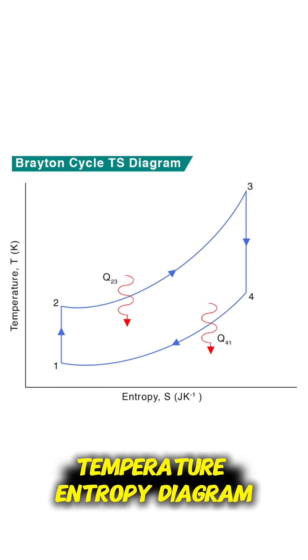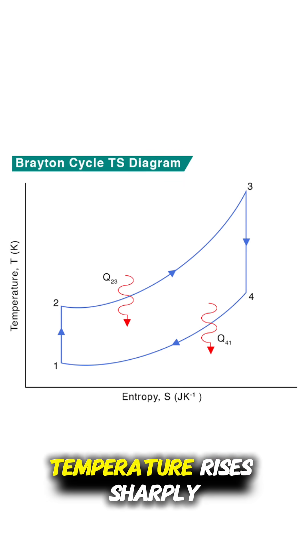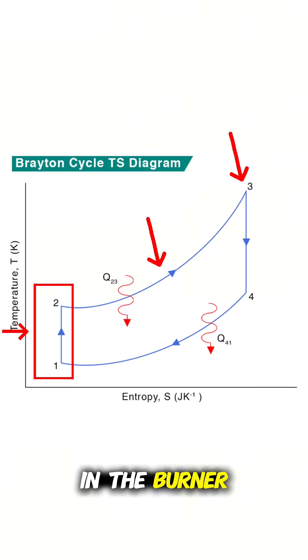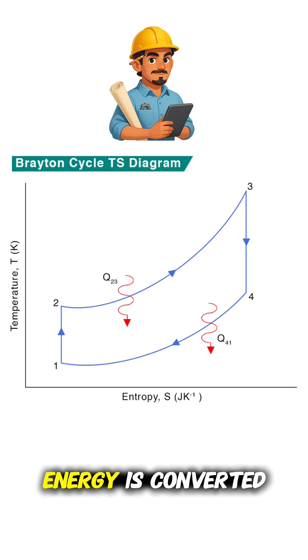The temperature-entropy diagram, which is the TS diagram, tells the thermal story. Temperature rises sharply in the burner, then drops in the turbine. This shows how efficiently energy is converted into velocity. The hotter the expansion, the faster the exhaust.